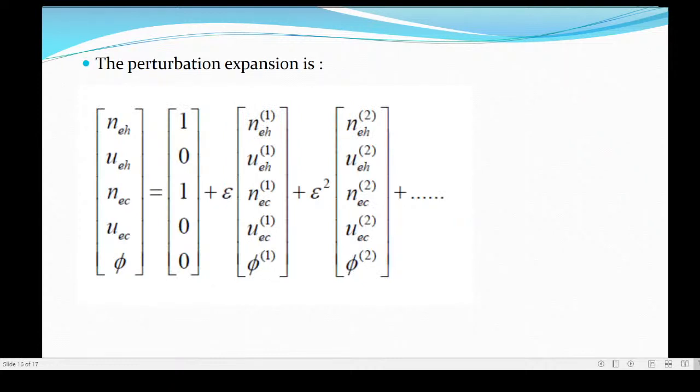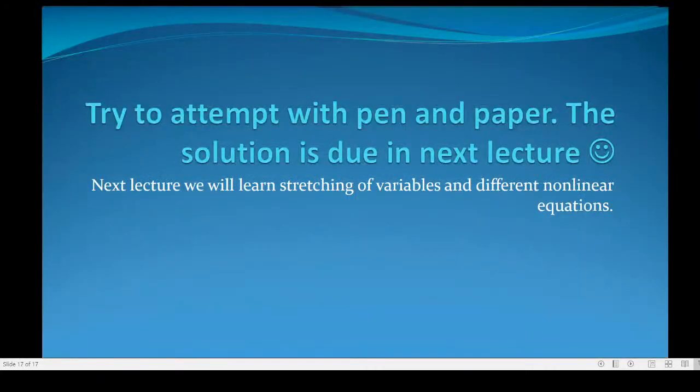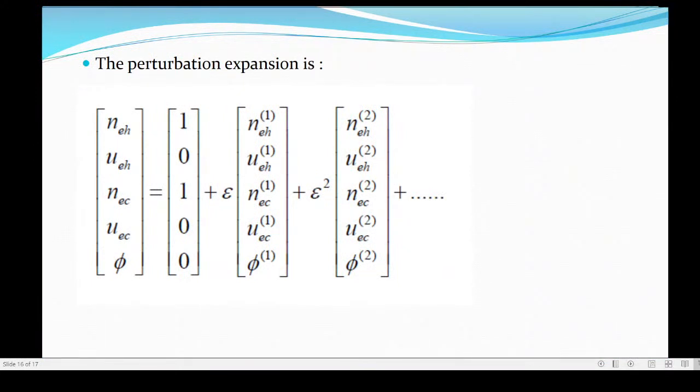For this the perturbation series that you will be using, the perturbation expansion that you will be using is given like this. n_eh, you see, I have taken it to be - since I have normalized the densities with the equilibrium values, then when the hot electron or cold electron divided by the equilibrium value, they will give you 1. We have not considered streaming, so u_h and u_c is 0. We also considered initial 0 potential, so phi is also 0 out here.